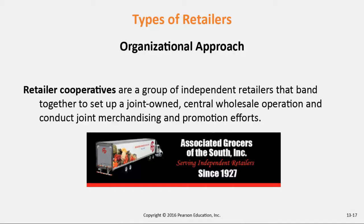Retail co-ops are different from voluntary chains. Associated Grocers is an example — that's a group of independent retailers who band together and actually have ownership in a warehouse operation. They conduct joint merchandising and promotion efforts. With a voluntary chain like IGA, you don't generally have ownership in the warehouse — you just have an agreement to buy wholesale from them. Associated Grocers of the South now operates mainly in Louisiana.